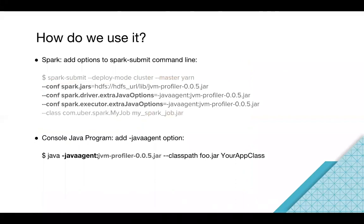For how to use it — this may be a bit technical, but the simple way to submit a Spark application is using the spark-submit command. You just add some command-line arguments — no code changes needed. And if you have a simple Java application, you can also use a single command to hook up the profiler. In short, it's just configuration — just by configuration, you can run it with your application.